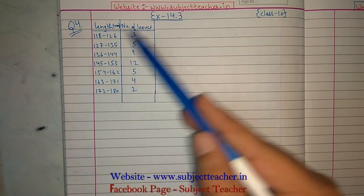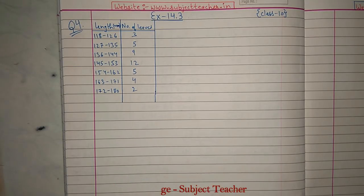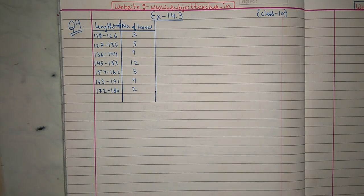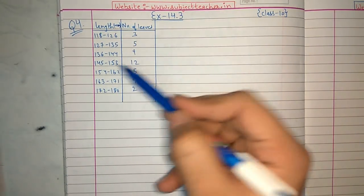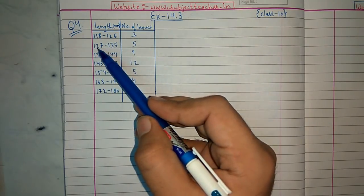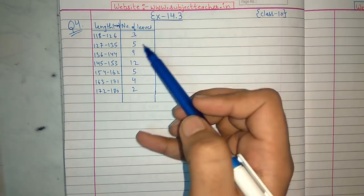Question 4 of Exercise 14.3. The length of 40 leaves of a plant are measured correct to the nearest millimetre. There are 40 leaves in a plant. The data obtained is represented in the following table. We have 118–126 mm length with 3 leaves, and 127–135 mm length with 5 leaves.